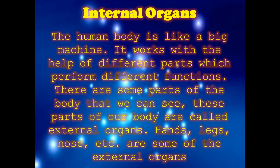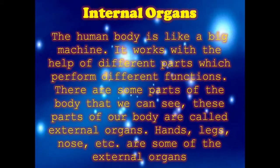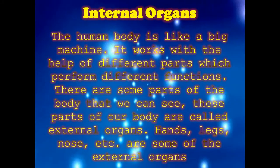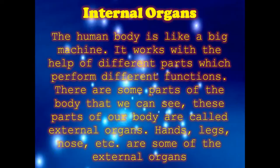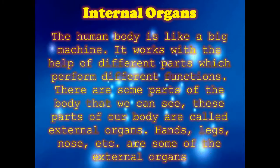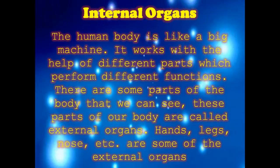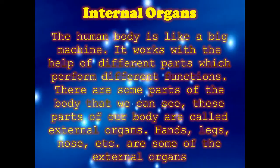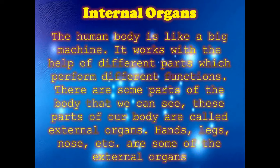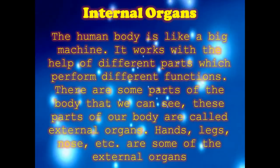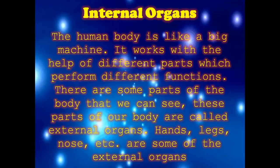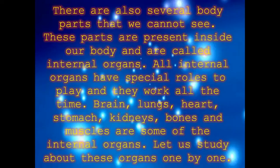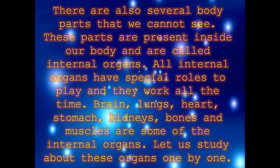The different parts of the body do different work. There are some parts of the body that we can see — these parts are called external organs: hands, legs, nose, etc. When I look at Mukul or Ashwin, I can see their eyes, hands, and legs. The things which can be seen are called external organs.